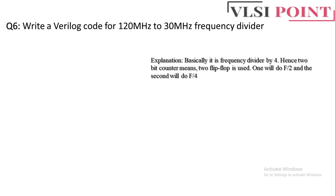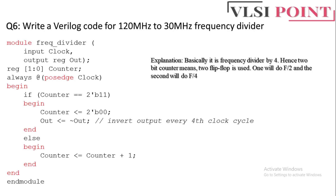Two flip-flops give four possible combinations: 00, 01, 10, 11. The module has input clock and output reg output, with a 2-bit reg counter. Always @(posedge clock): if counter equals 2'b11 (maximum value), reset counter to 0 and toggle the output (assign ~output to output). The output is toggled every 4 clock cycles to achieve divide-by-4 behavior. Otherwise, increment the counter by 1.